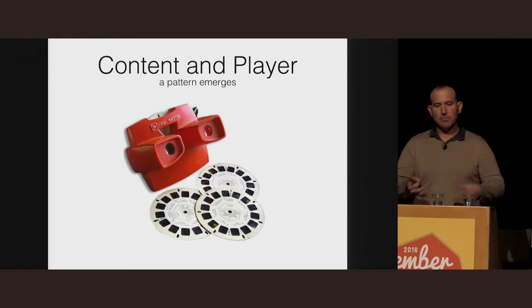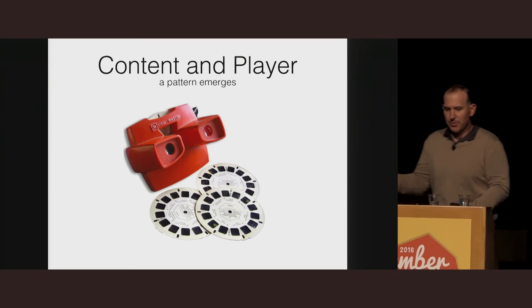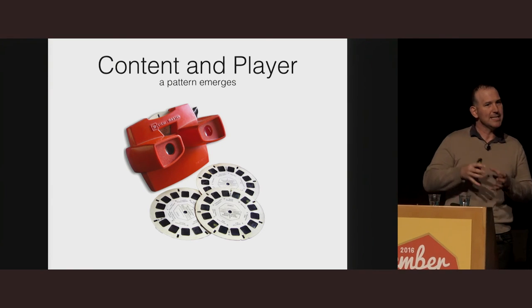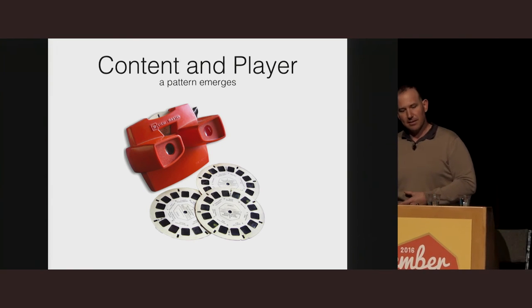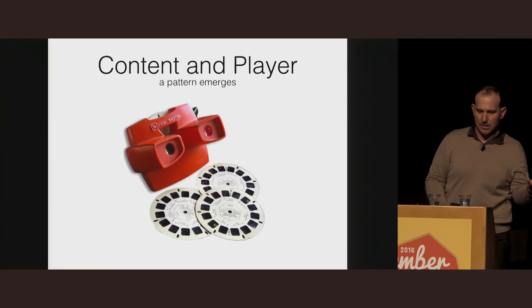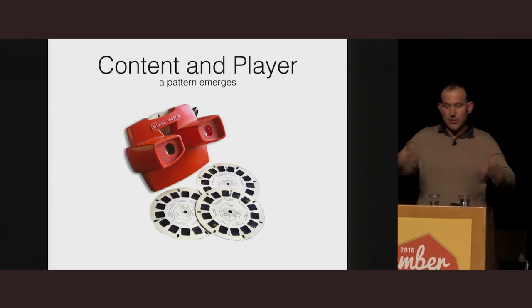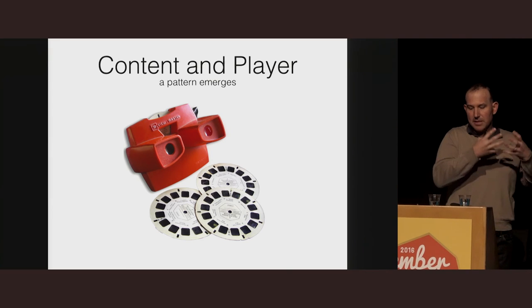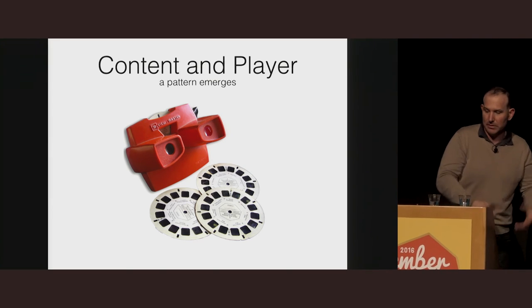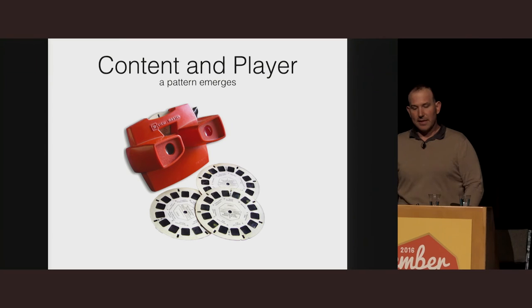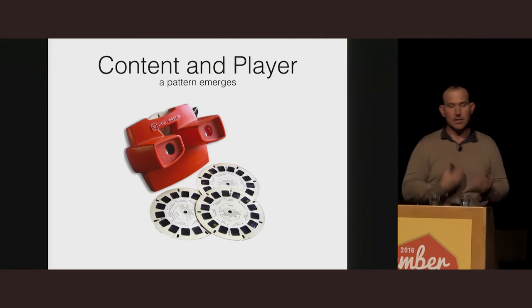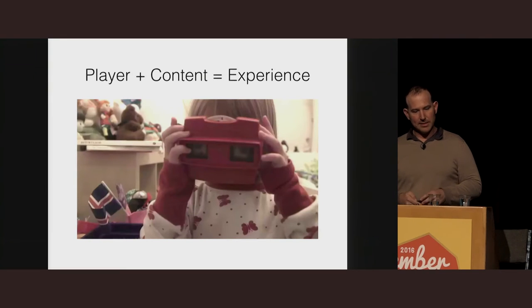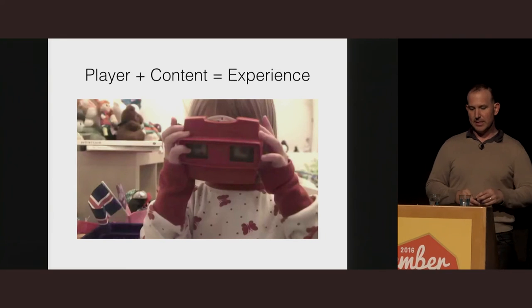At some level, a movie and an immutable JavaScript framework share the same architecture — they both work by separating content from the player. The content, or stream of content, is static. Each frame is unchanging — it's immutable. While the player is the thing that changes and rearranges itself in order to render that content. When we play the content, that's when we see the experience.